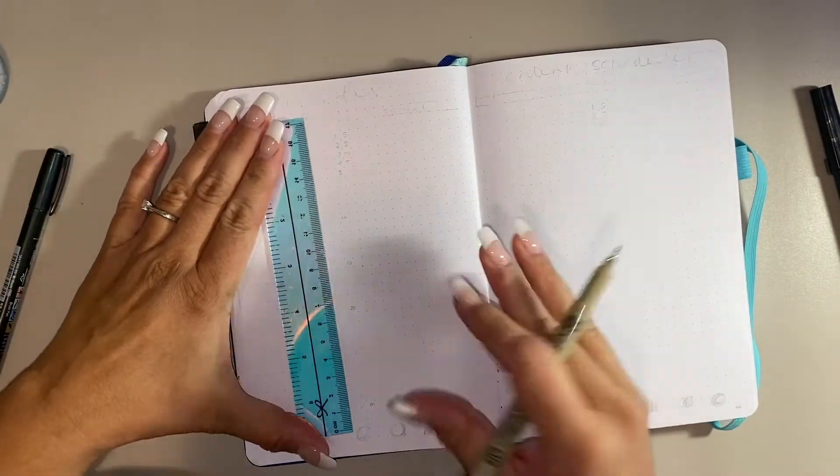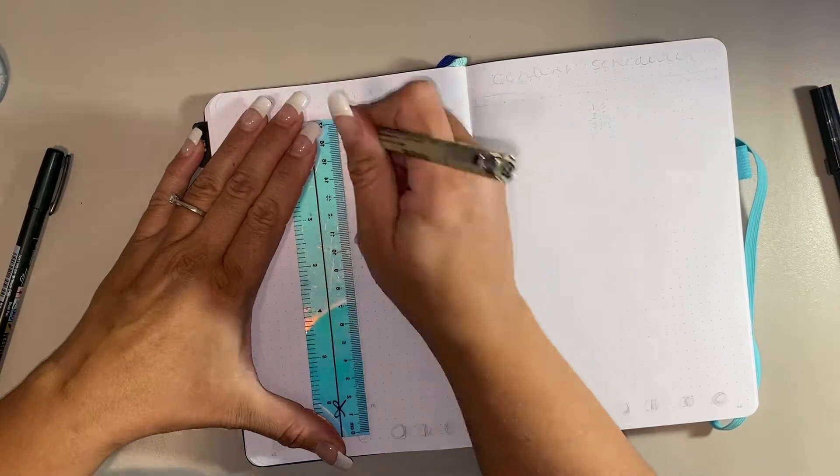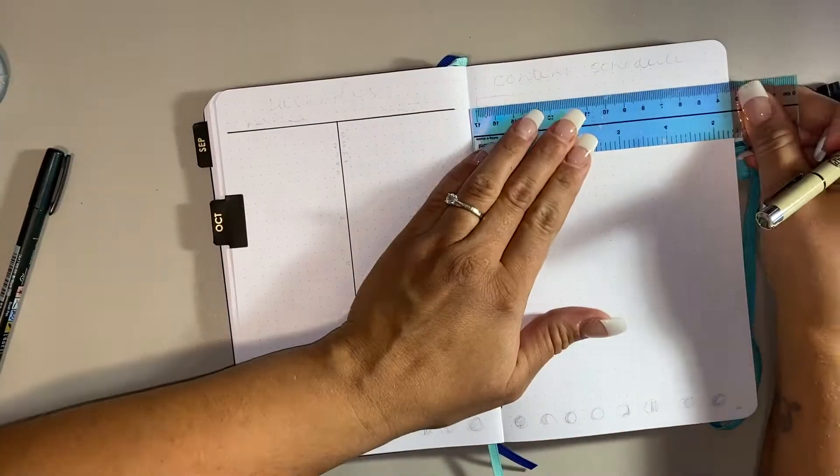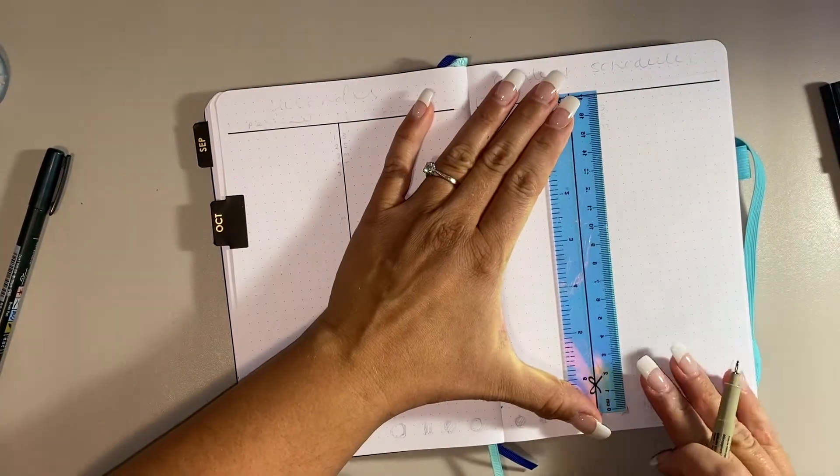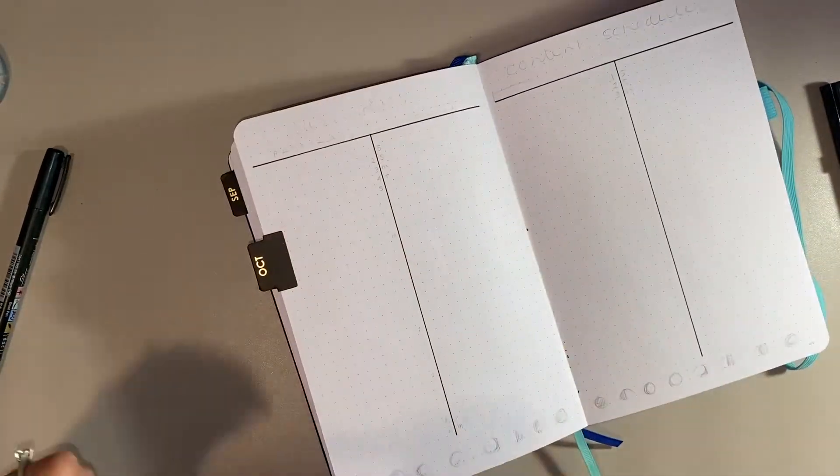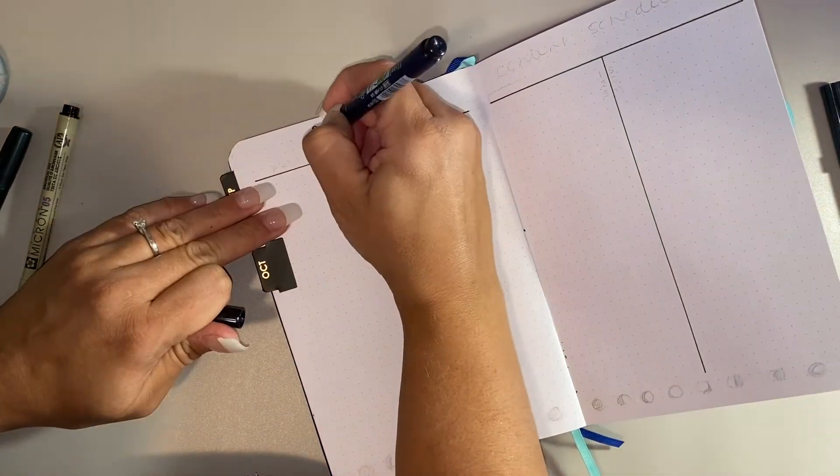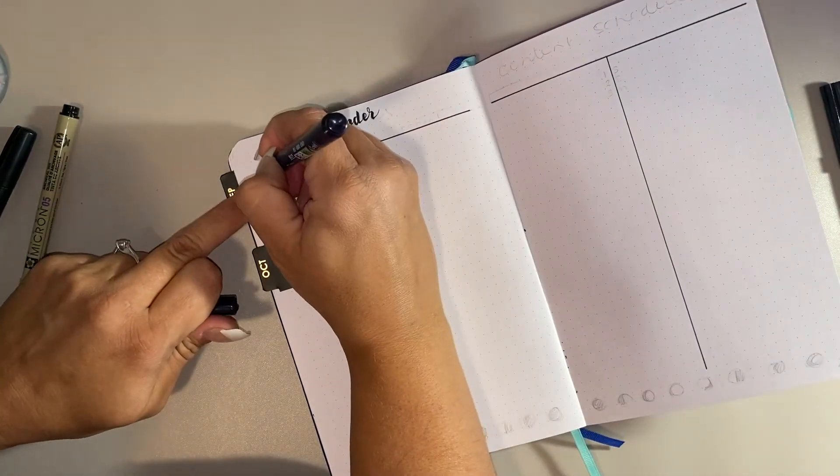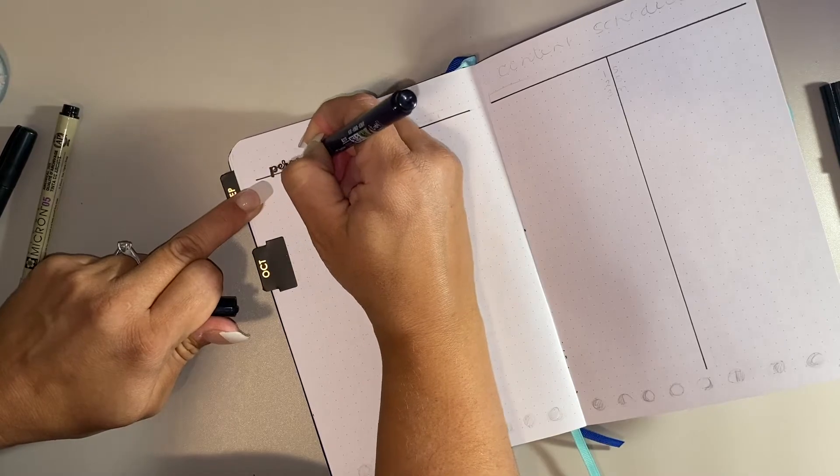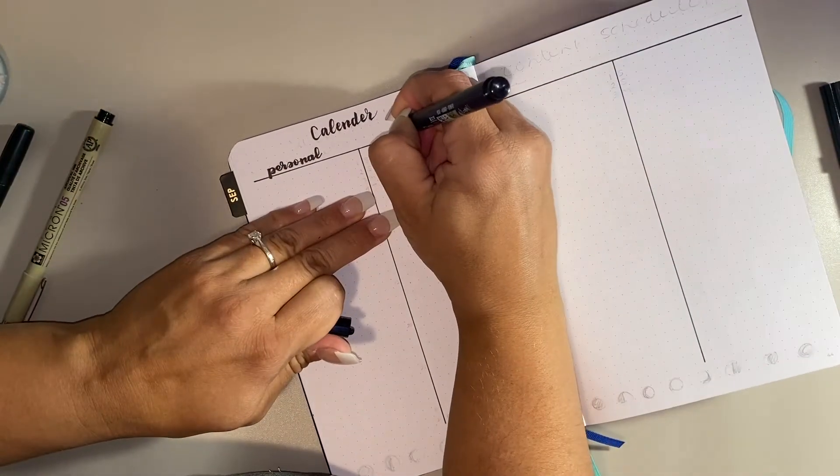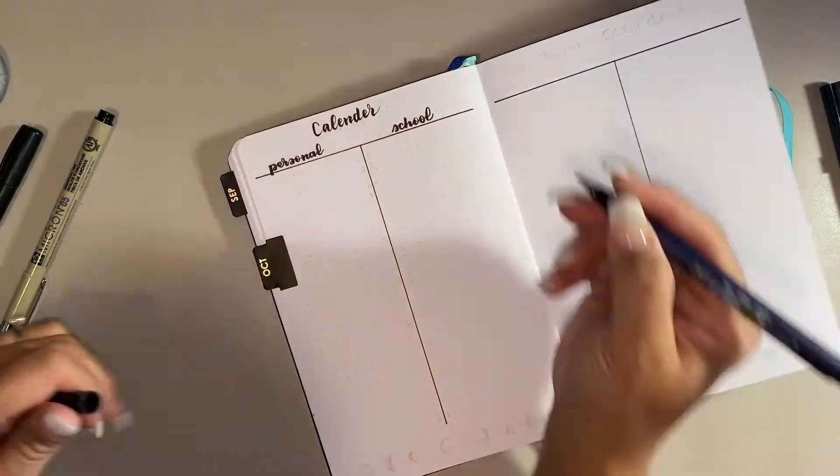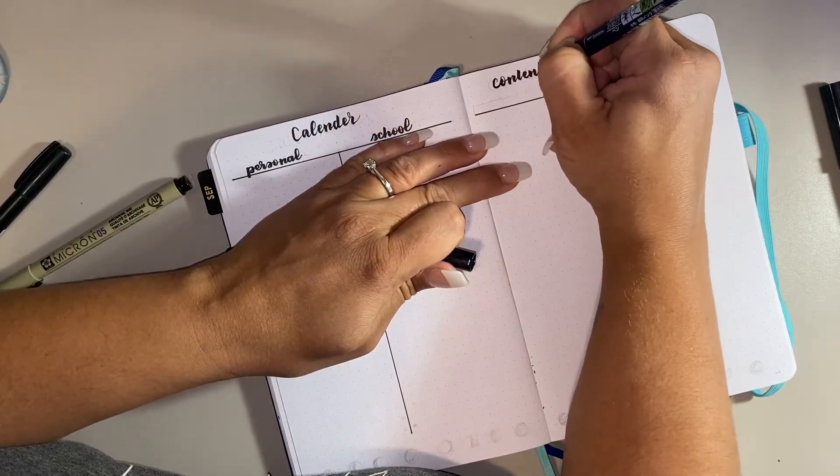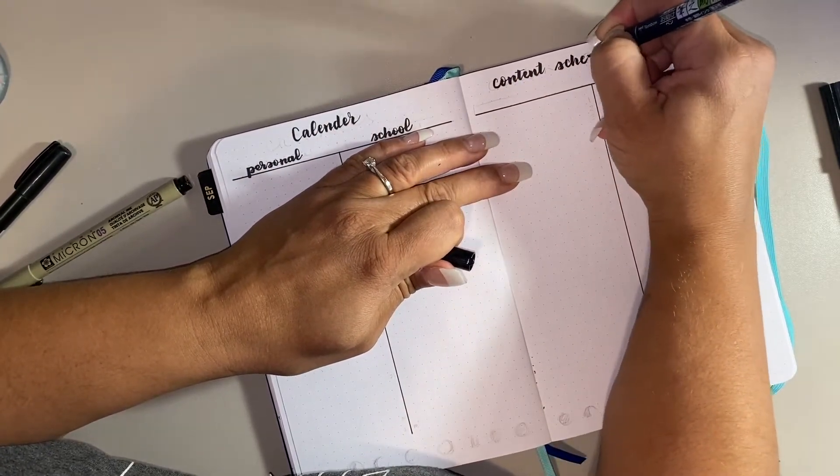So now the second spread is my calendar, and lately I have been staying away from doing the grid style calendars. I don't know if it's because it's more work or if it's because it just takes longer to create the boxes and count all the squares, but I really do enjoy this kind of original Ryder Carroll style of list calendar. Then what I do is I put my line down the center along with my days of the week, and then I can break my calendar up into halves.